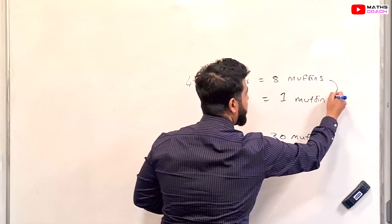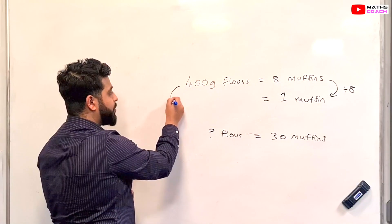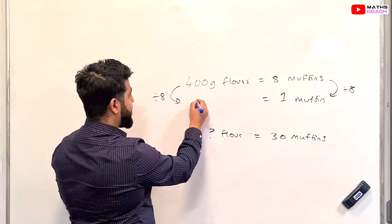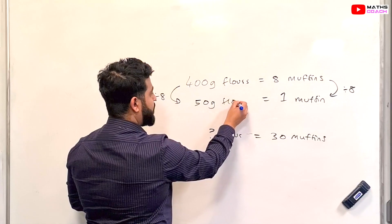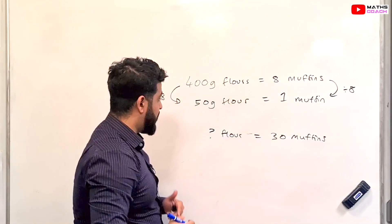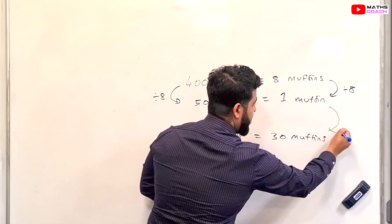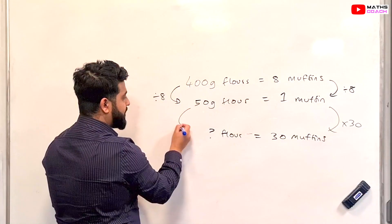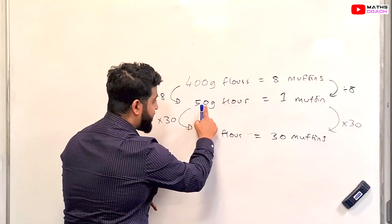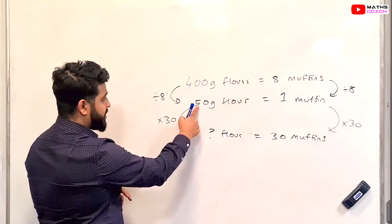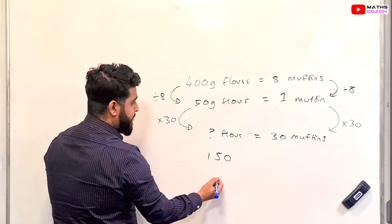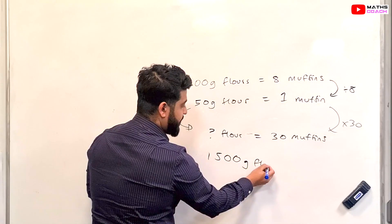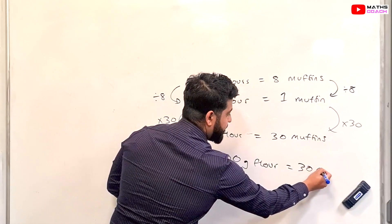How does 8 become 1? We divide by 8. Because it's a direct proportion relationship, we also divide the other side by 8: 400 divided by 8 gives us 50 grams. So 50 grams of flour is required for one muffin. We want 30 muffins, so we multiply by 30. 50 grams times 30 equals 1500 grams of flour needed to make 30 muffins.